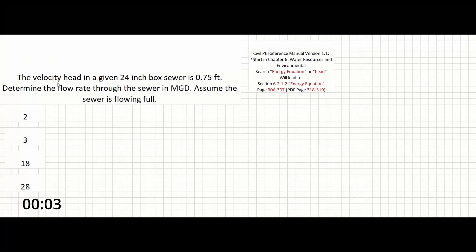In this problem, the velocity head in a given 24 inch box sewer is 0.75 feet. Determine the flow rate through the sewer in MGD. Assume the sewer is flowing full.